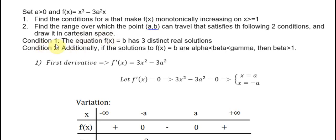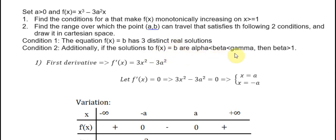Condition number 1: The equation f equals b has three distinct real solutions. Condition number 2: Additionally, if the solutions to f equal b are alpha, beta, and gamma, then beta is greater than 1.